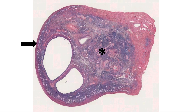The ovary is divided into two layers: the cortex, noted at the arrow, which contains ovarian follicles and stroma, and the medulla, noted at the asterisk, which is central and contains loose connective tissue and blood vessels, lymphatic spaces, and nerves.